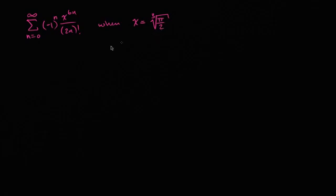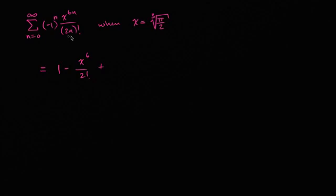Let's work through this together. I like to expand out the power series to get a better sense of what it looks like. When n is zero, the term is one. When n is one, it's negative x to the sixth over two factorial. When n is two, it's positive x to the twelfth over four factorial. When n is three, it's negative x to the eighteenth over six factorial, and you keep going on forever.